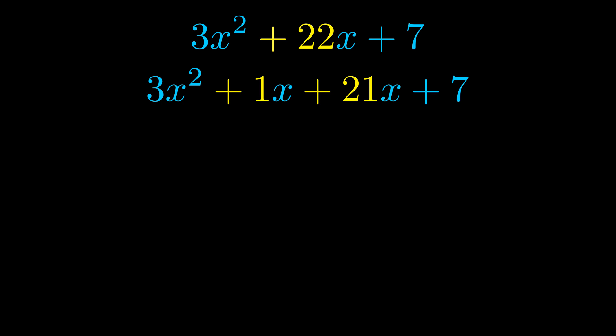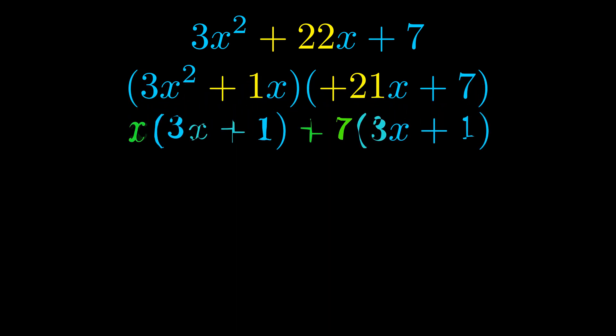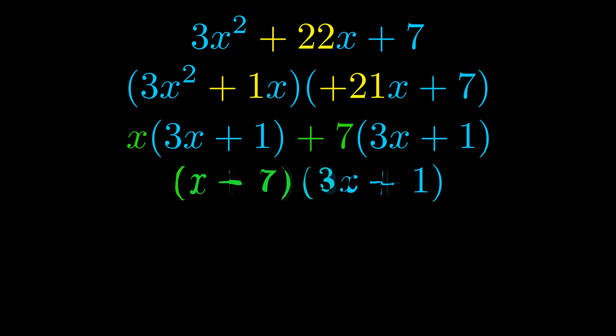Once we've done this, we go ahead and put parentheses around the first term and the last term. And we do that so that we can take the greatest common factor out of both terms. We can see the greatest common factor is now outside in green. Notice also how what remains inside of the parentheses is the same in both cases. The blue values are the same.